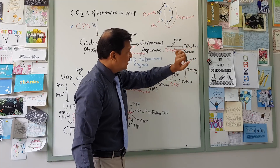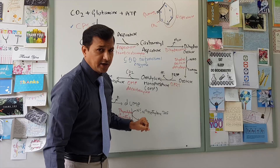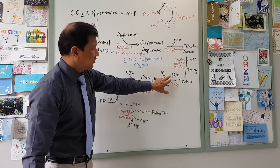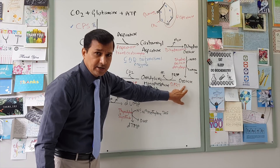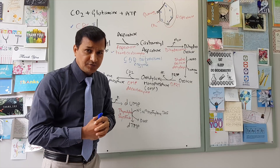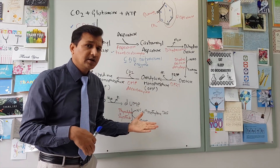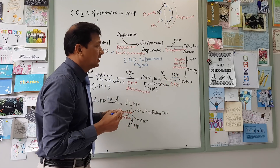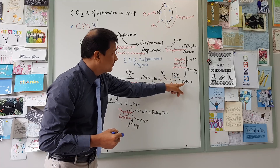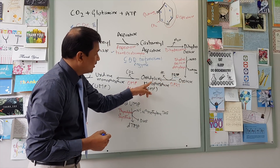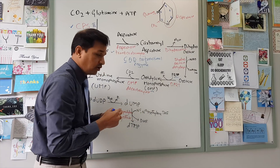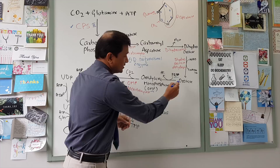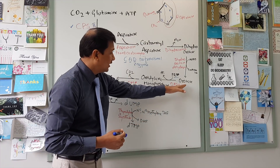Dihydroorotate undergoes an oxidation-reduction reaction done by dihydroorotate dehydrogenase to give orotate, which is a pyrimidine ring. Orotate then receives ribose and phosphate from PRPP — phosphoribosyl pyrophosphate — converting orotate to orotidylate monophosphate, OMP, which is now a pyrimidine nucleotide. This job is done by OPRT enzyme, orotate phosphoribosyl transferase, which transfers ribose phosphate to orotate to give OMP.